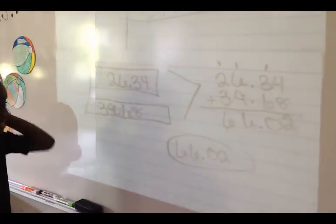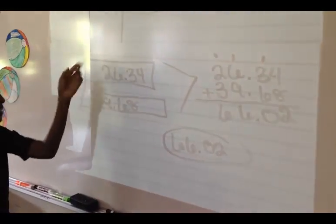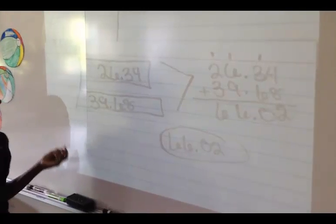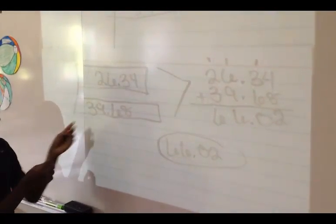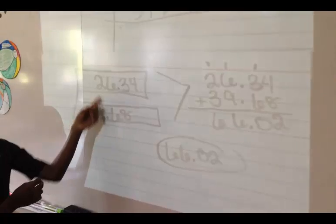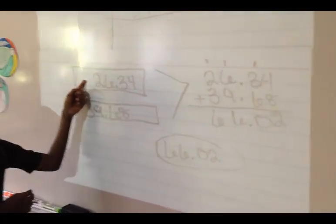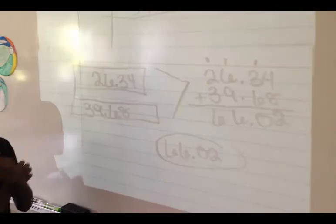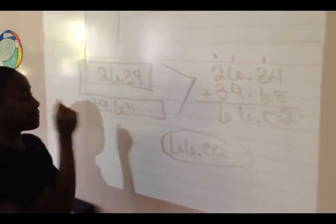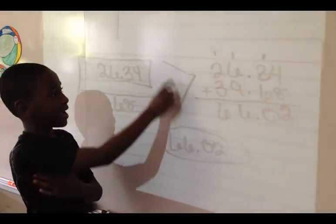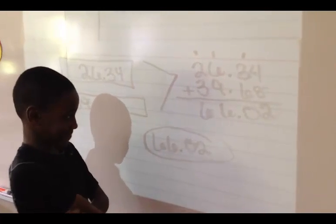So I did a tape diagram. I put two boxes. I put each of the numbers in it. Why is one bigger than the other? Because this one is bigger than this one, so I made this one longer and this one shorter — because 39 is bigger than 26. What's your little arrow saying there? It shows I can add them, because we want to know the total.